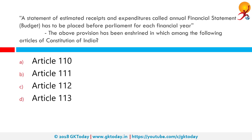A statement of estimated receipts and expenditures, called the Annual Financial Statement or Budget, has to be placed before Parliament for each financial year. This provision is enshrined in Article 112 of the Indian Constitution, which says that every year the President of India shall cause to be laid before both houses of Parliament the Annual Financial Statement, popularly known as the Budget.